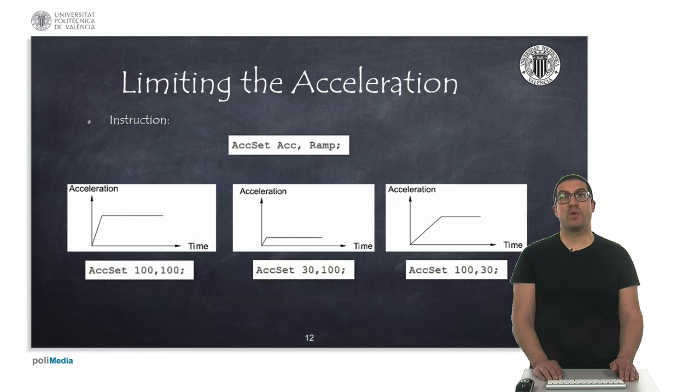When a robot has to transport delicate objects, we might be interested in controlling not only the speed, but also the maximum acceleration and slope of this acceleration, also known as jerk. The AccSet instruction allows you to limit the maximum acceleration value and to set the acceleration ramp.